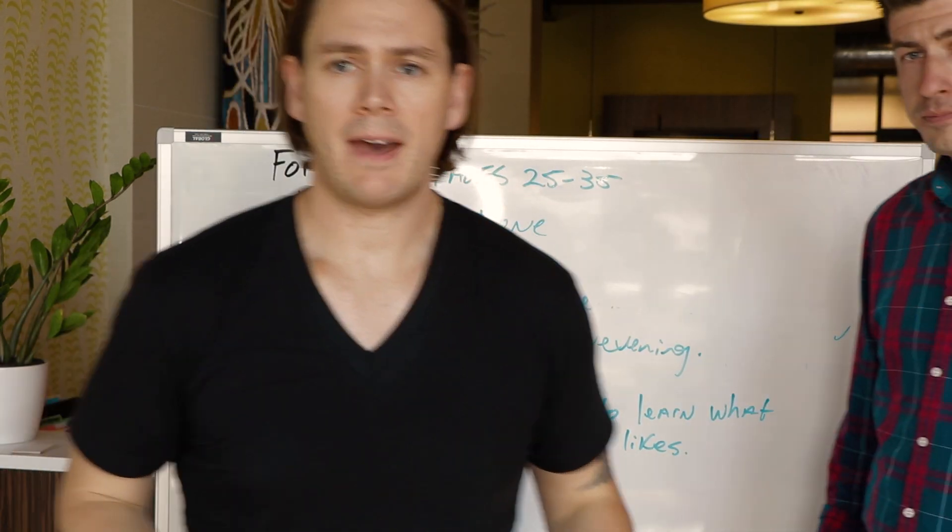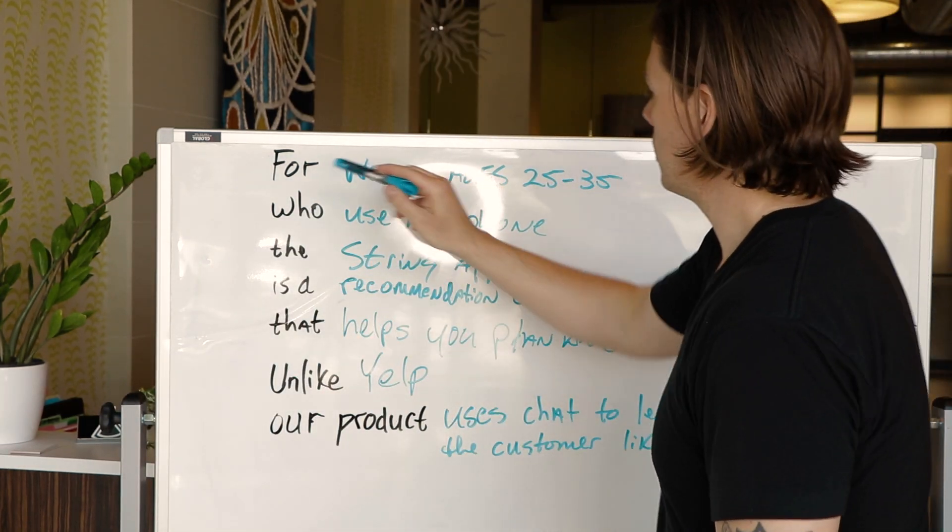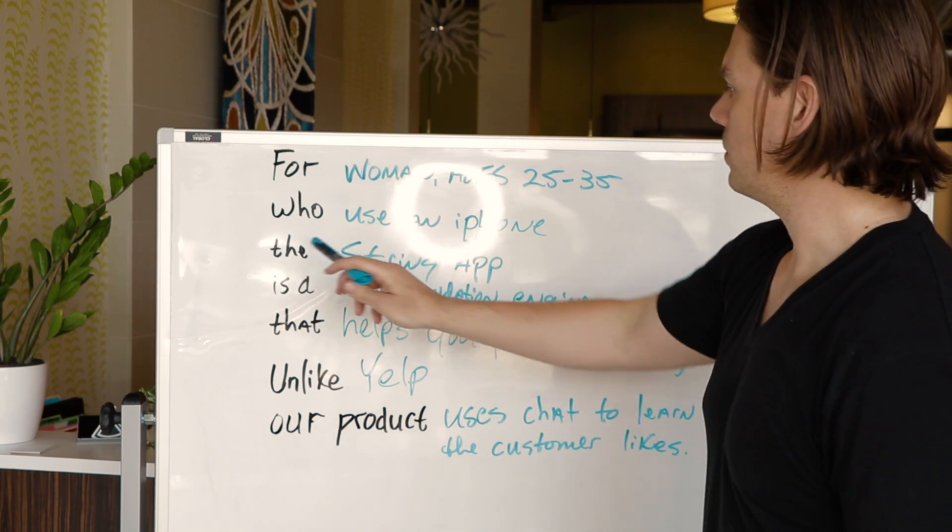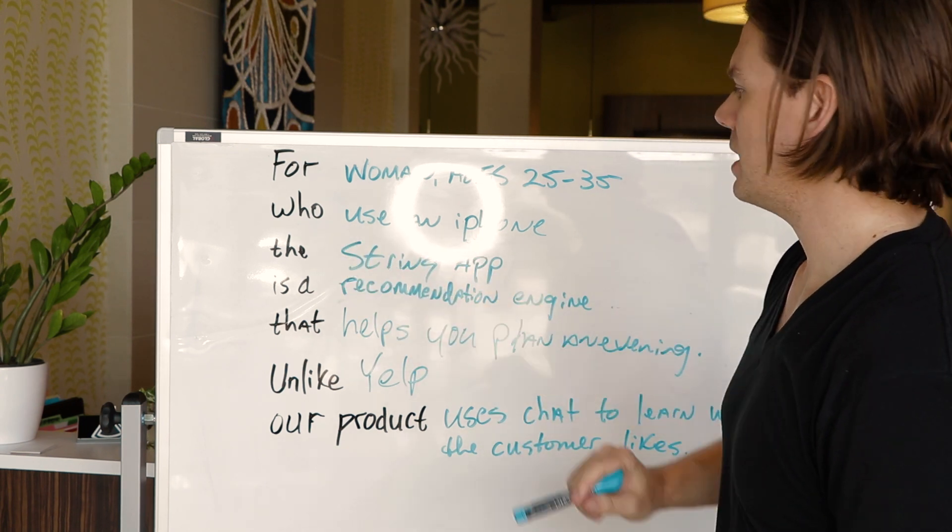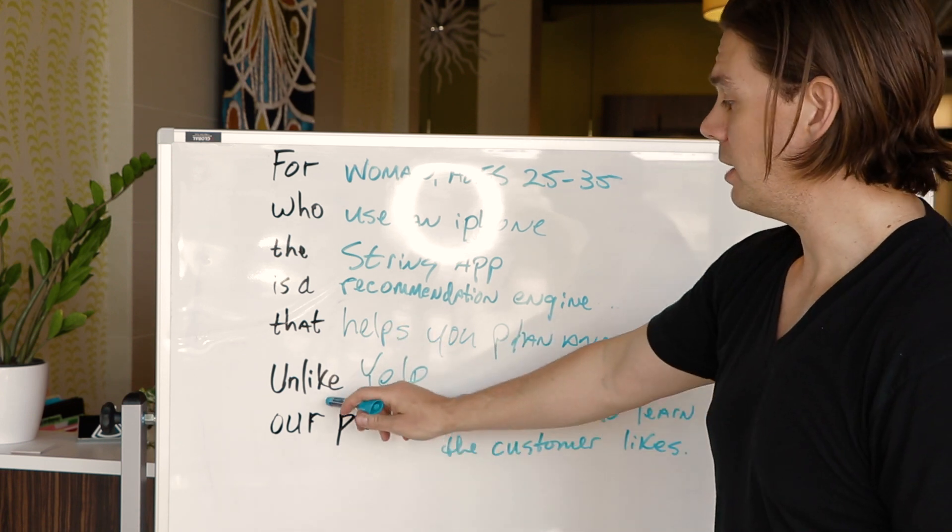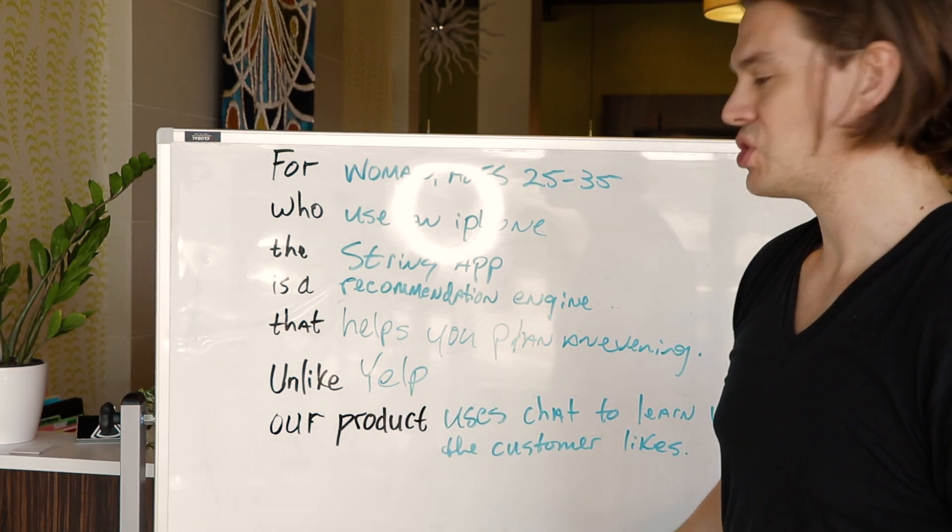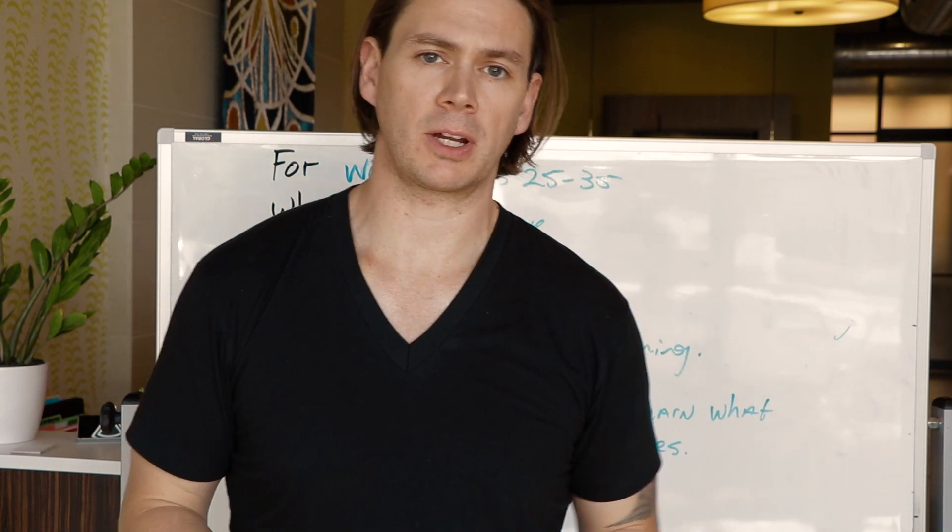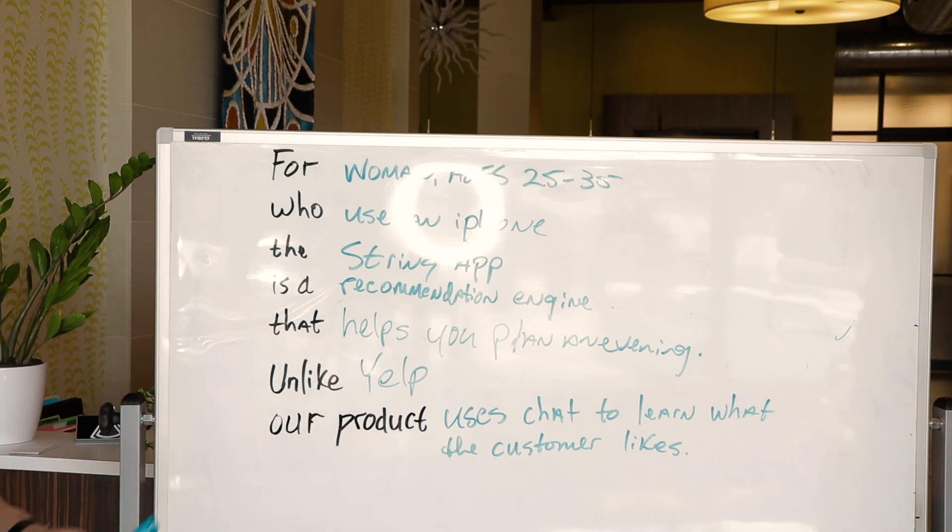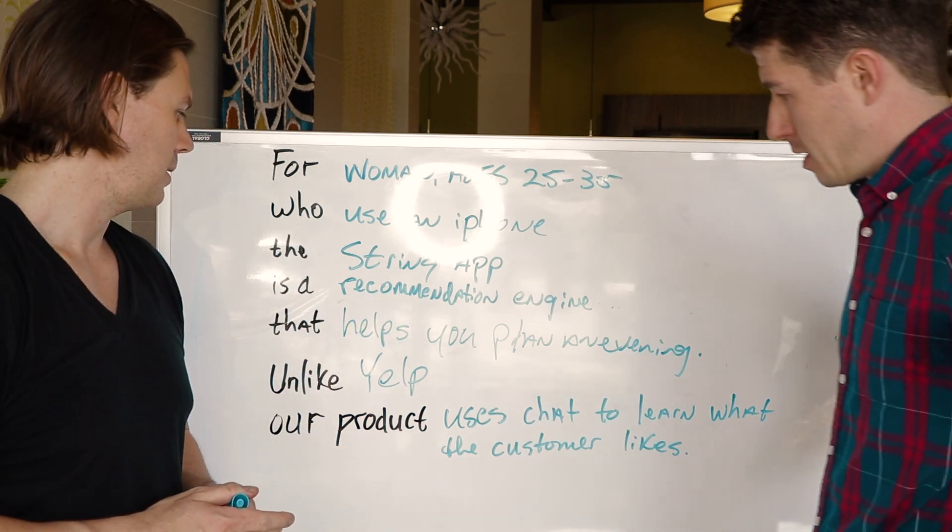So now we have it. For women ages 25 to 35 who use an iPhone, the String app is a recommendation engine that helps you plan an evening. Unlike Yelp, our product uses chat to learn what the customer likes and make recommendations accordingly. It's a really simple tool that you can use. What do you think, George?